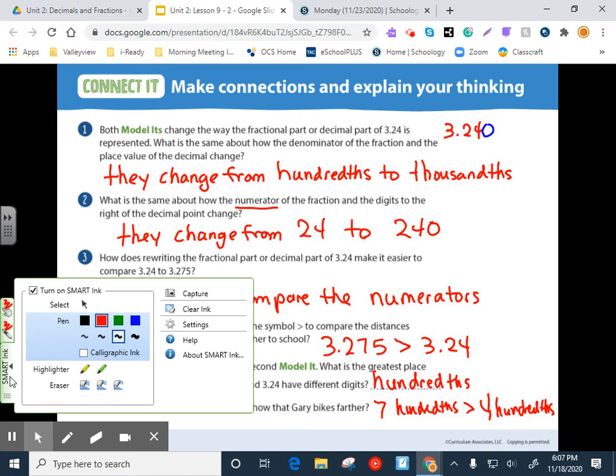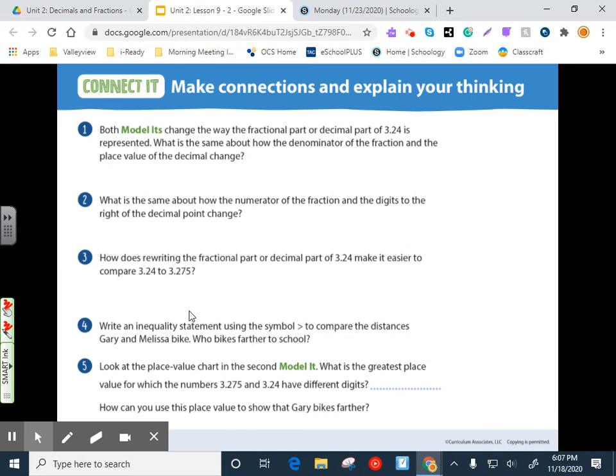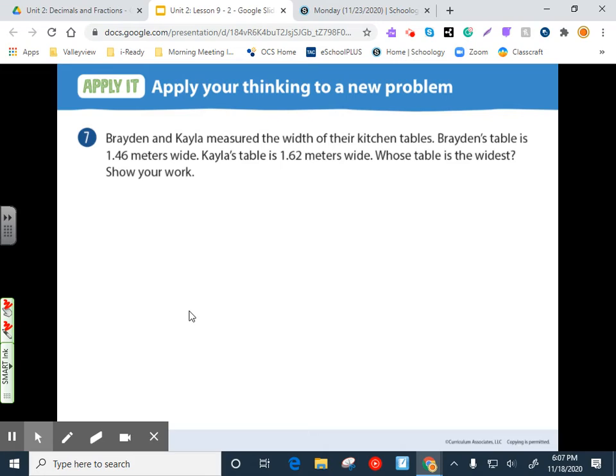And you can skip number six. We don't need to talk about that. Alright. So turn the page to one seventy four. Braden and Kayla measured the width of their kitchen tables. Braden's table is one and forty six hundredths meters wide. Kayla's table is one and sixty two hundredths meters wide. Whose table is the widest? Show your work.